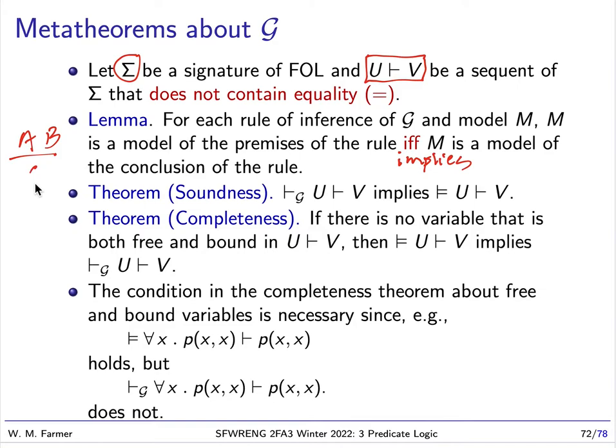So usually if we have a rule of inference like this, from A and B we can infer C. Usually what that means is if A is valid in a model and B is valid in a model, then C is valid in a model.